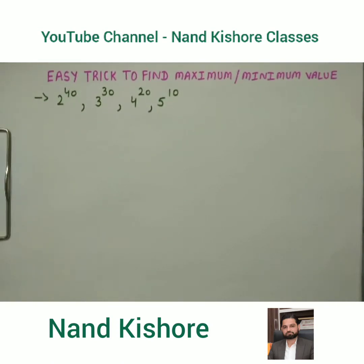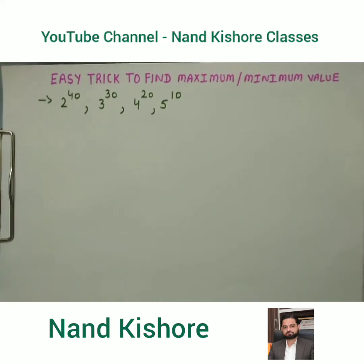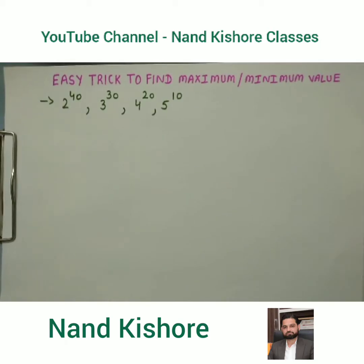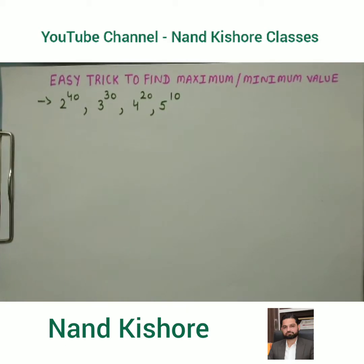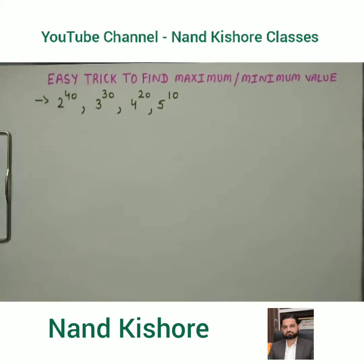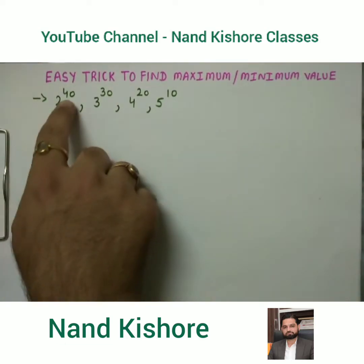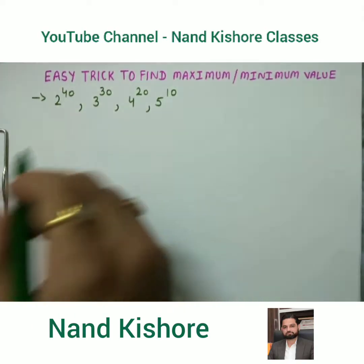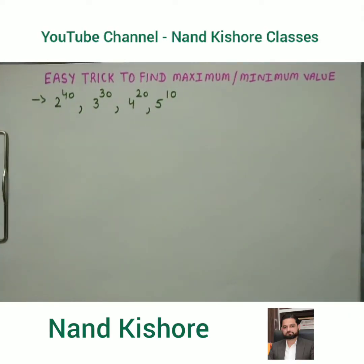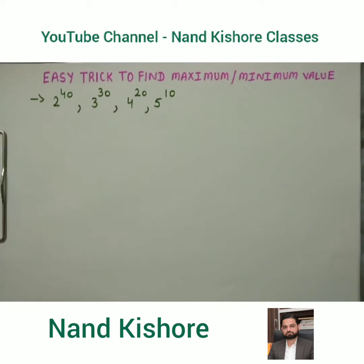Hello friends, today we are going to study a very important topic: finding the maximum or minimum value out of given values with large powers. This is a very important concept from a competition point of view. In competitive exams, these kinds of questions come up, and those who haven't learned these tricks usually leave them because the powers — 40, 30, 20, 10 — are not very easy to solve. But there is a shortcut trick to find out which one is maximum or minimum.